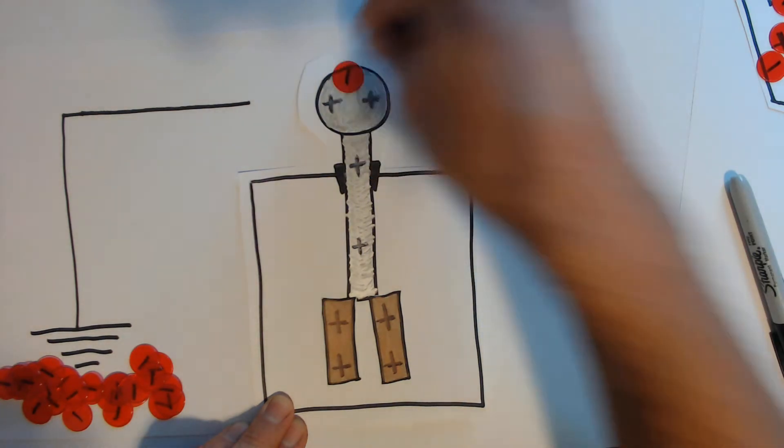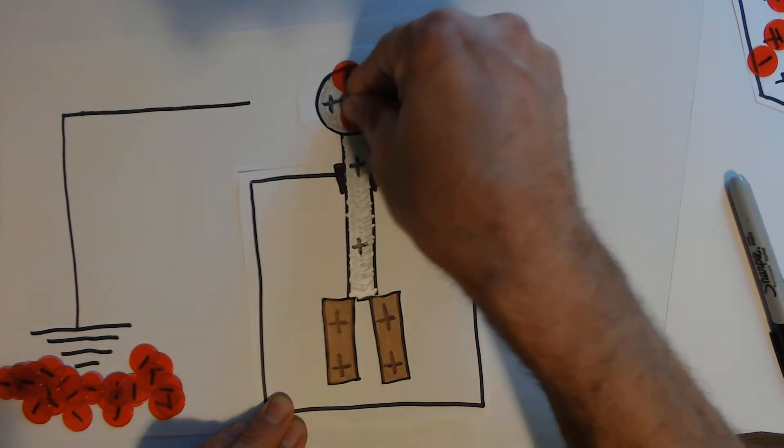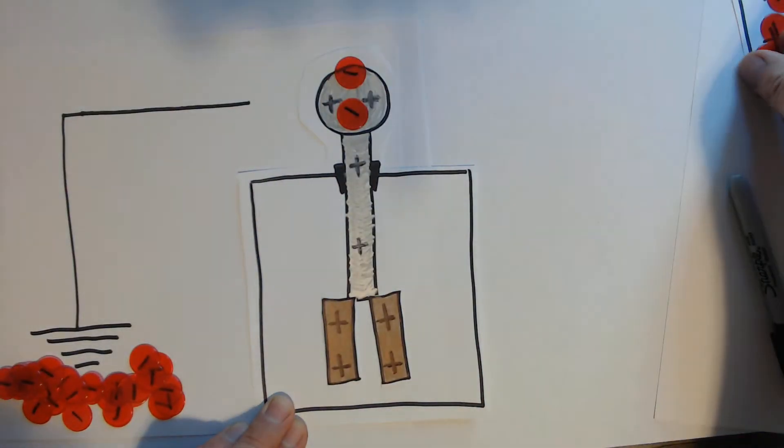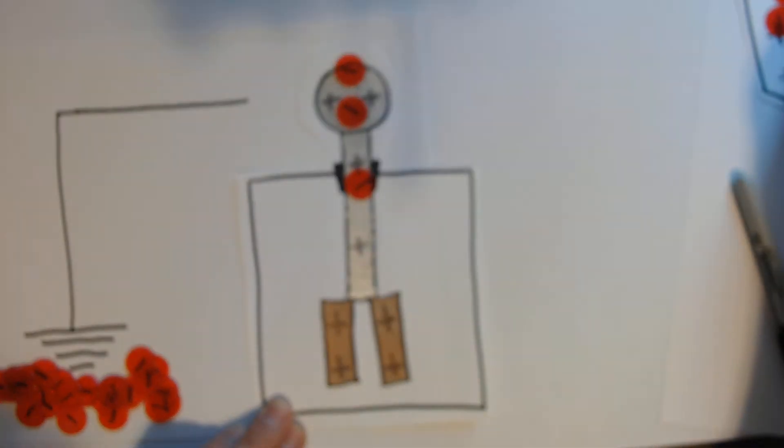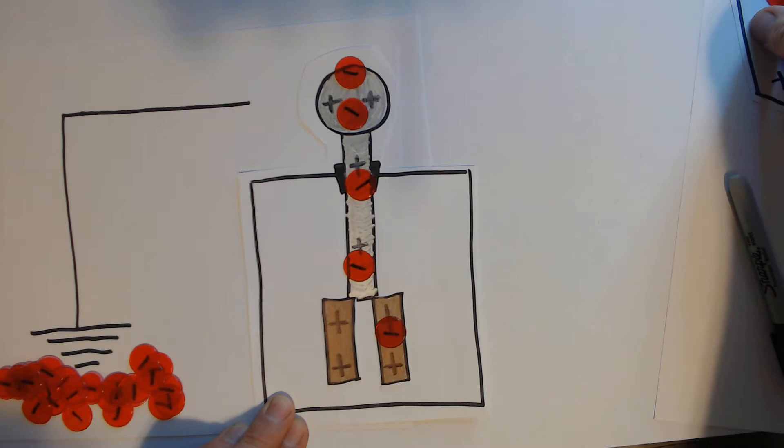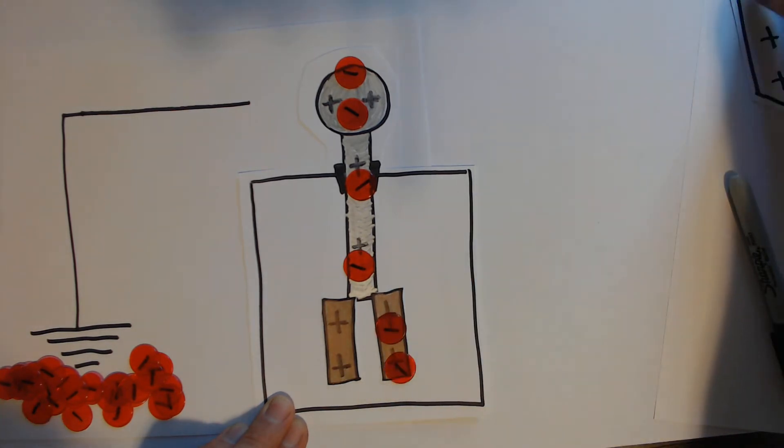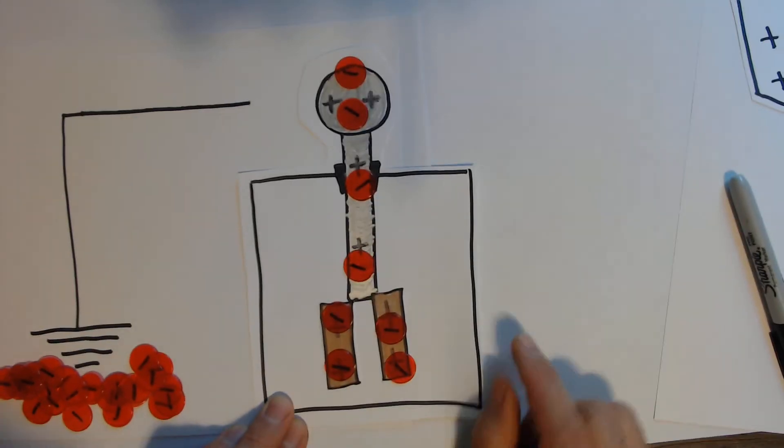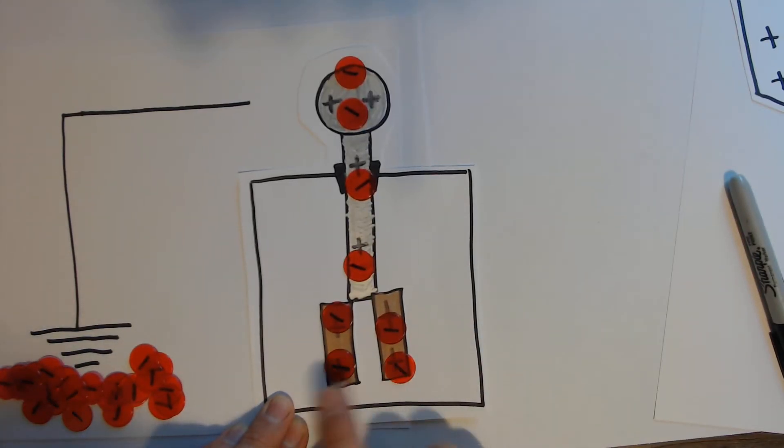Now we're going to start off with it as neutral, so it's going to have eight negatives on it. And the eight negatives and the eight positives balance out, so these are both going to have the same charge, but they're both going to be neutral. So nothing actually happens, there's no attraction or repulsion, they're both neutral.